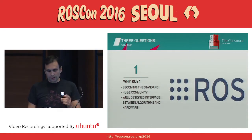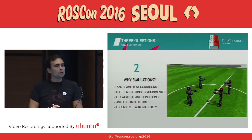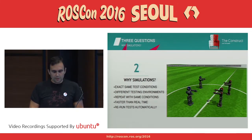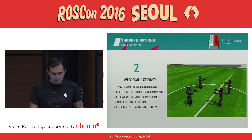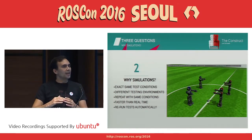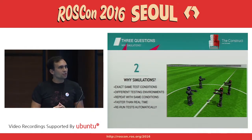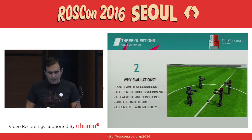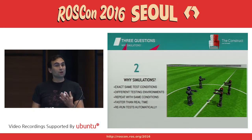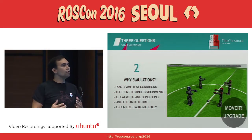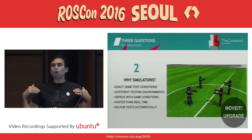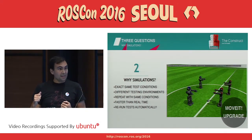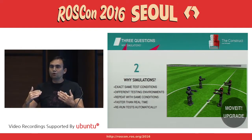Why simulations? Because simulations provide the exact same environment to everyone. You can create different testing environments for the same problem very easily. You can repeat those tests with the exact same conditions every time. You can run them in real time or faster than real time, and you can rerun tests automatically if something changes — for example, if MoveIt changes, you can rerun the whole bunch of tests against the new version and get a new score.